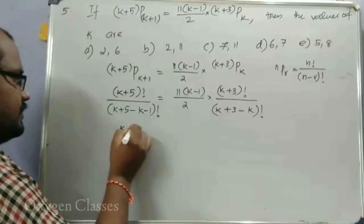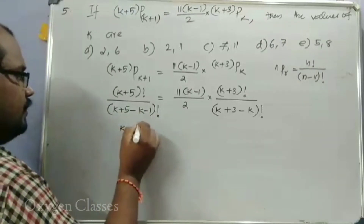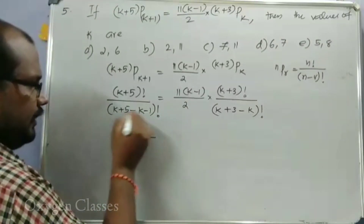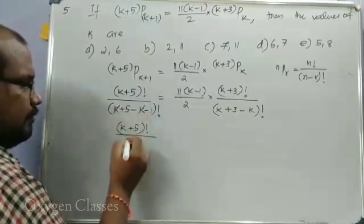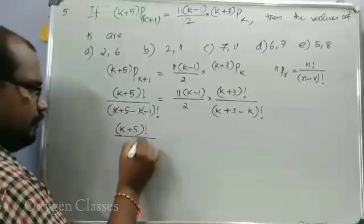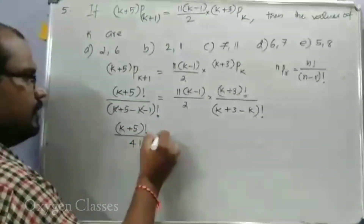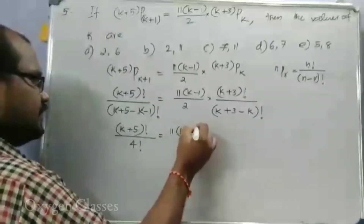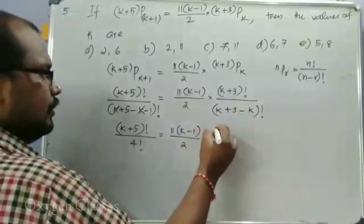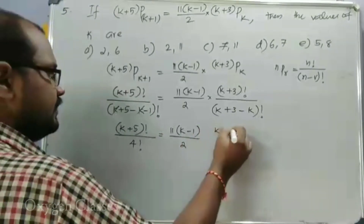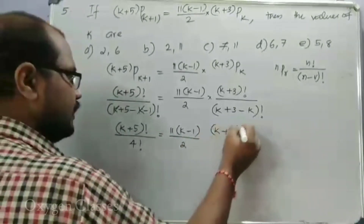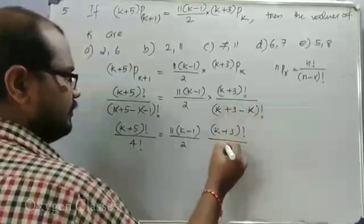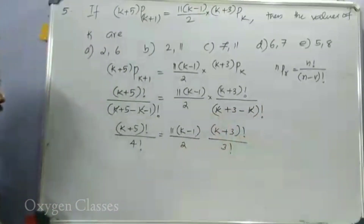Simplifying: k plus 5 factorial divided by 4 factorial is equal to 11 into (k minus 1) divided by 2 into (k plus 3) factorial divided by 3 factorial.